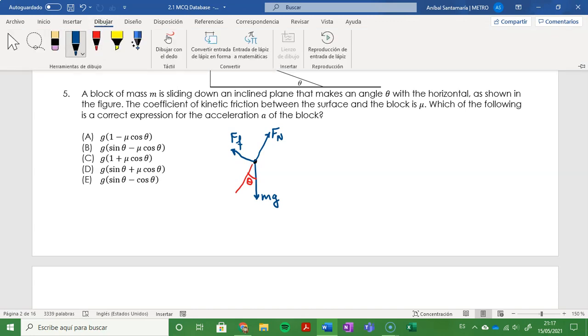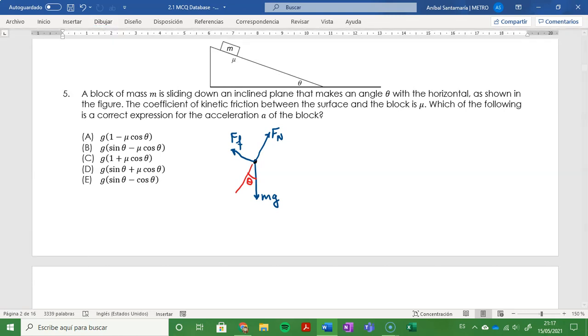When we make an equation analysis with these ideas, we know that the x component of the weight minus the frictional force has to be equal to mass times acceleration, because the object is accelerating in the x direction. There is no acceleration in the y direction, so the normal force and the y component of the weight have to cancel each other.